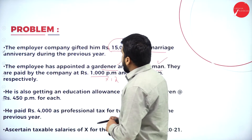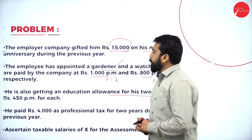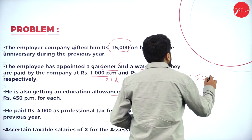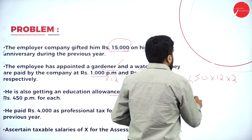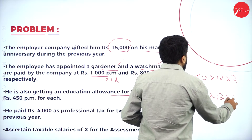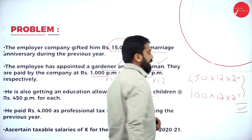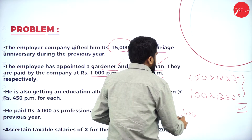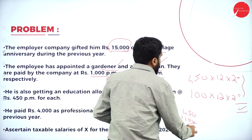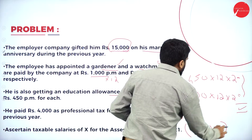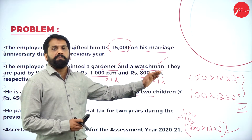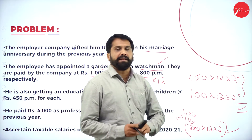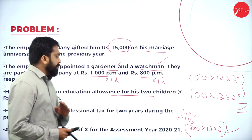He is also getting an education allowance for 2 children at 450 per month for each. The calculation is 450 into 12 into 2, minus the basic exemption limit of 100 per month into 12 into 2, giving a taxable amount of 8,400. Alternatively, compute 450 minus 100 = 350, then 350 into 12 into 2 for the same final answer.